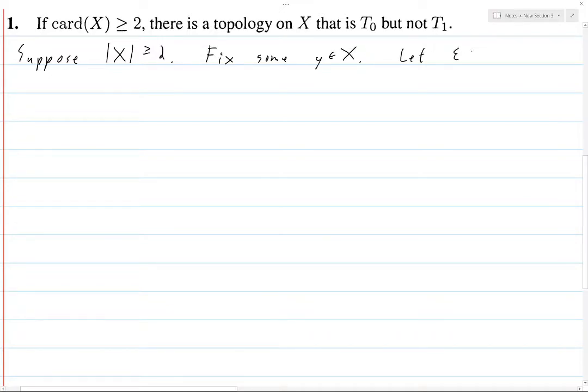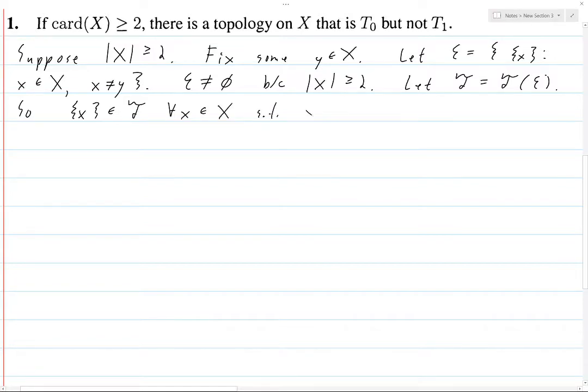So fix some y in X. Let fancy E be the collection of all singleton sets {x} such that x is in the set X and x is not equal to y. Fancy E is not empty because X has at least two elements, so X contains at least one element which is not y.